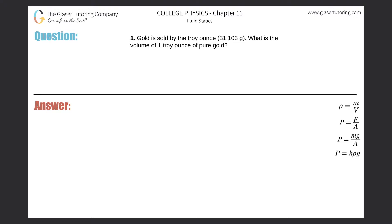Number one: Gold is sold by the troy ounce, which is equivalent to 31.103 grams. What is the volume of one troy ounce of pure gold? We need to know one other thing to answer this question.